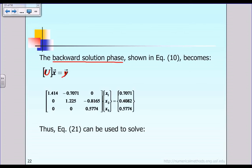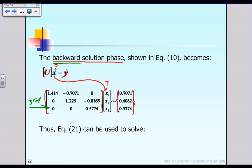Now, phase 3 is the backward solution phase. The objective is to figure out the original unknown vector X. Matrix U is already known from the factorization step, and the intermediate vector Y is known from the forward solution phase. Because this is the backward solution phase, we look at the last equation first — the third equation — and solve for X3.